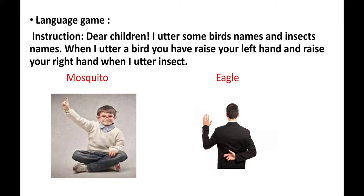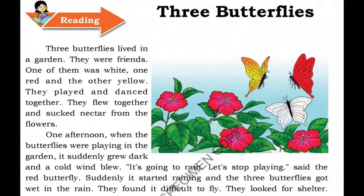See, three butterflies lived in a garden. They were friends. One of them was white, one red, and the other yellow. They played and danced together. They flew together and sucked nectar from the flowers. Nectar — where do we get nectar? We get nectar from flowers. It is very sweet. The three butterflies feed on nectar.